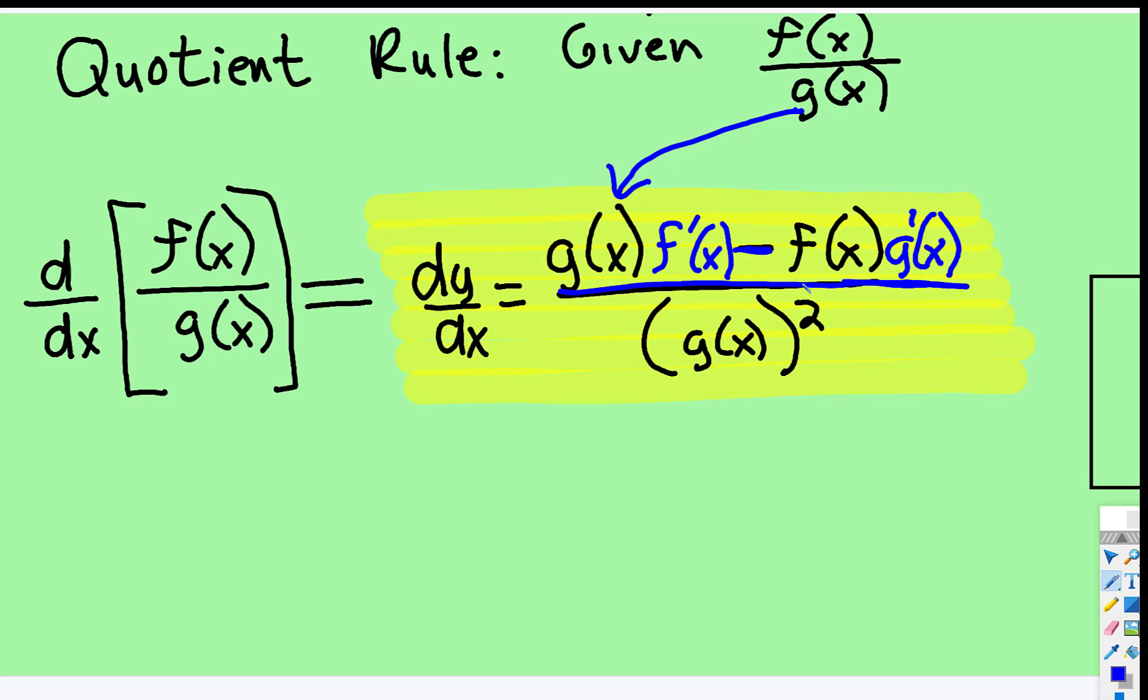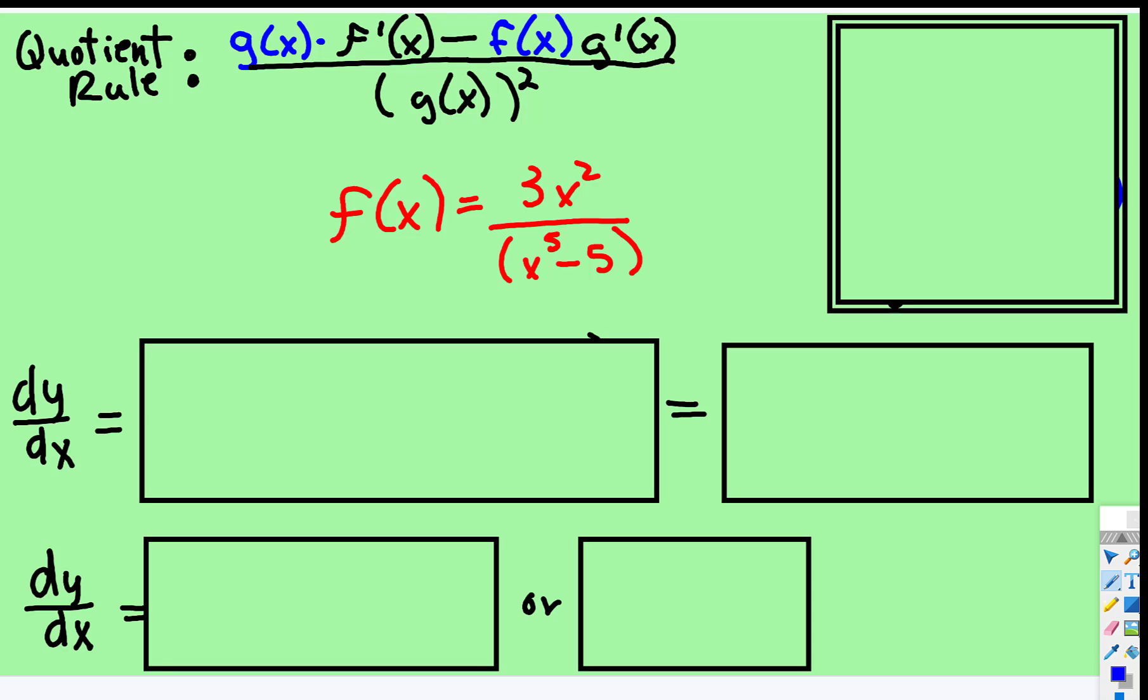And then you put all of that over the original g function squared. So let's see if we've got one. We do. So let's use that previous example that we used.